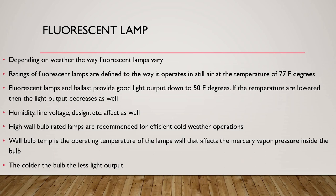Humidity, line voltage, design, and so on all affect performance as well. High bulb-rated lamps are recommended for efficient cold weather operation. Wall bulb temperature is the operating temperature of the lamp's wall that affects the mercury vapor pressure inside of the bulb. The colder the bulb, the less light output.